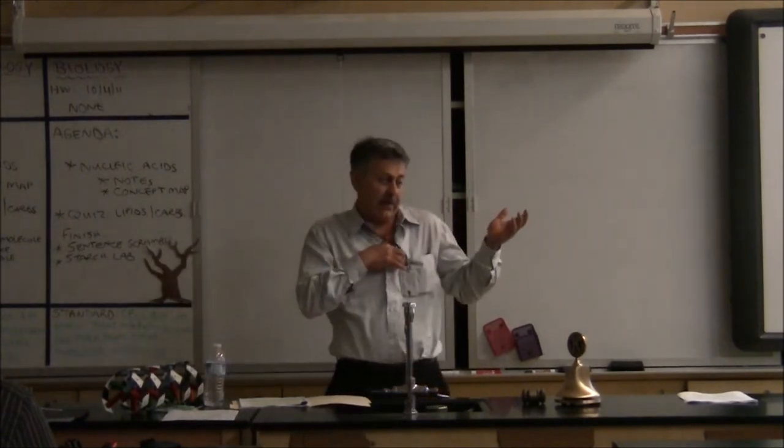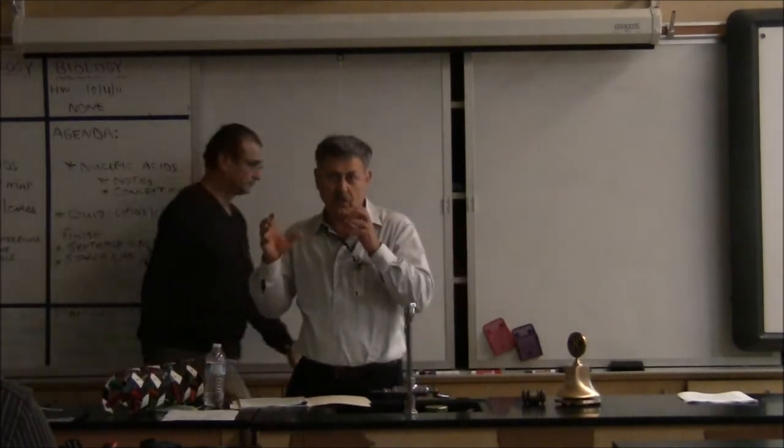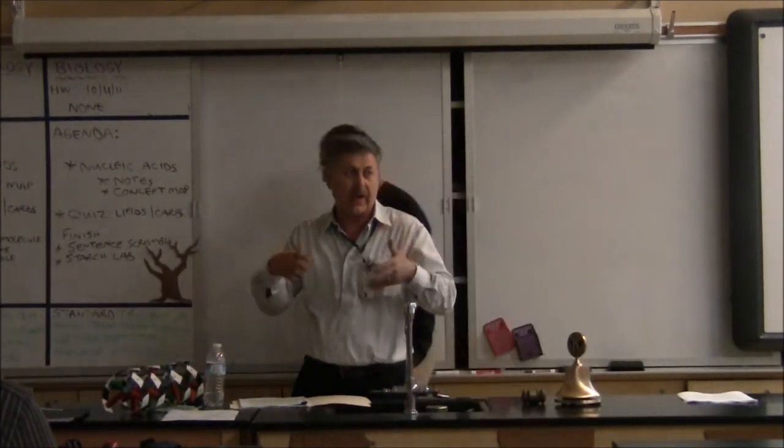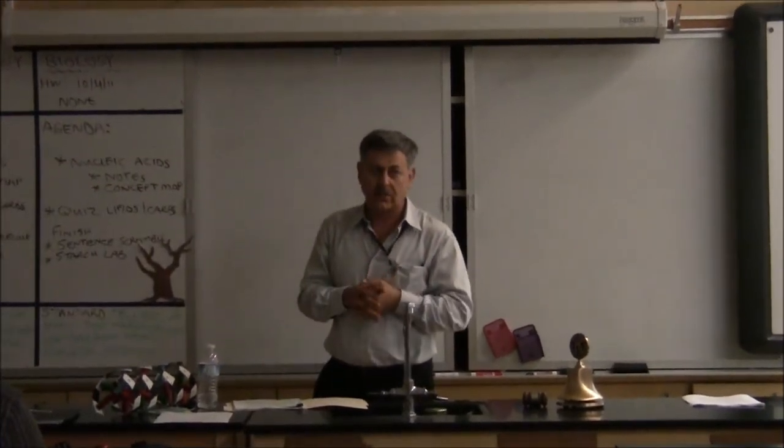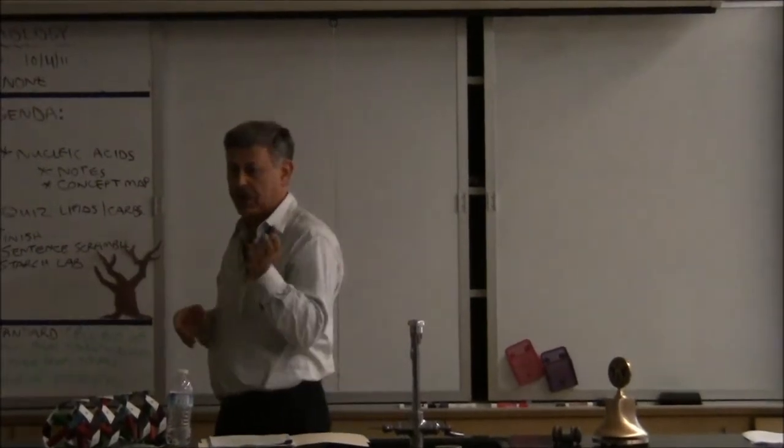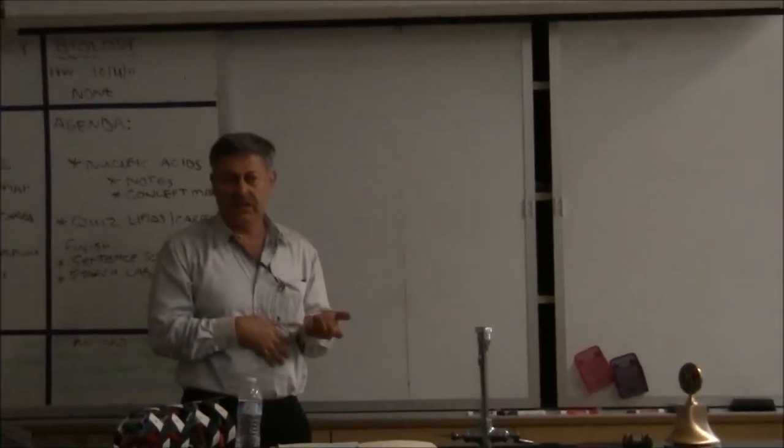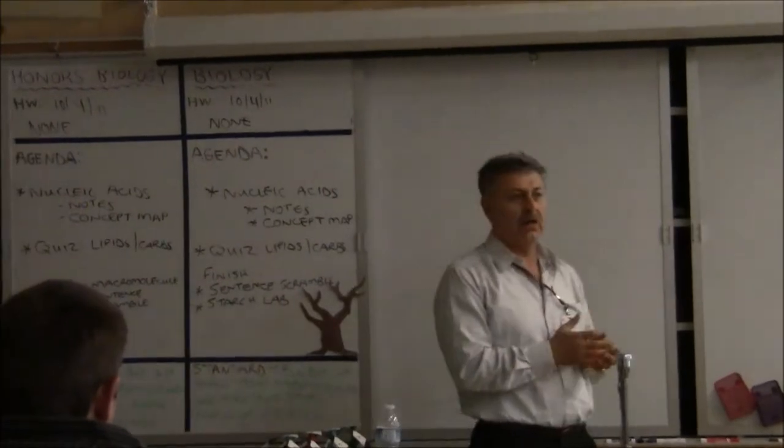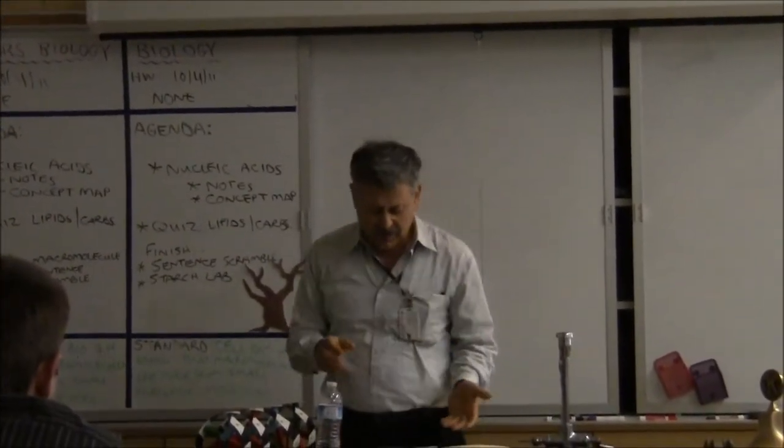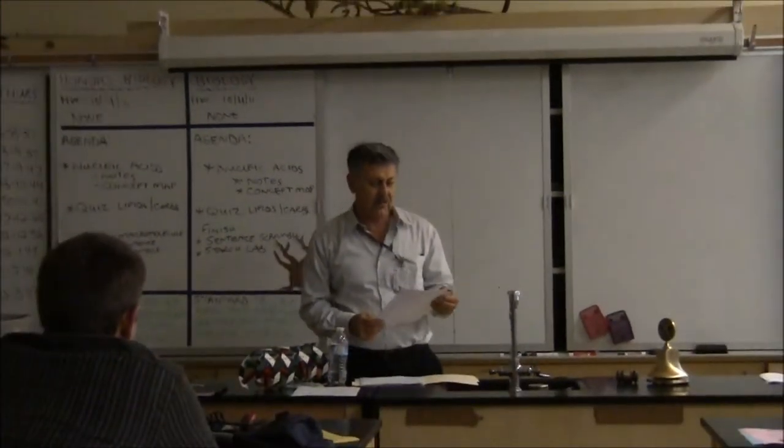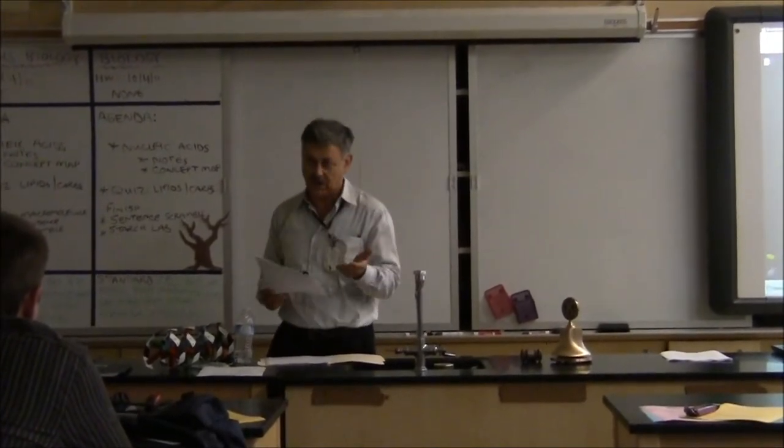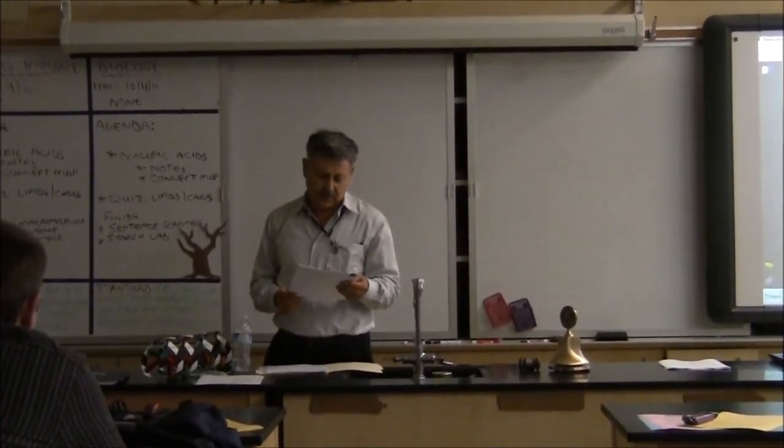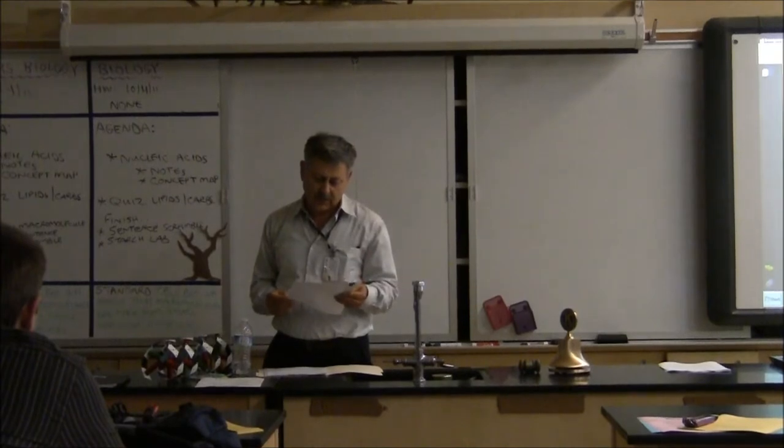The water coming out of the dam generates electricity on the other end because it turns the wheel or the generator. That's the potential energy. In this mousetrap car, the energy that's stored in this spring before it unleashes the energy, that's a potential energy. Then that potential energy converts to what is called a kinetic energy. Kinetic energy is what moves the car.